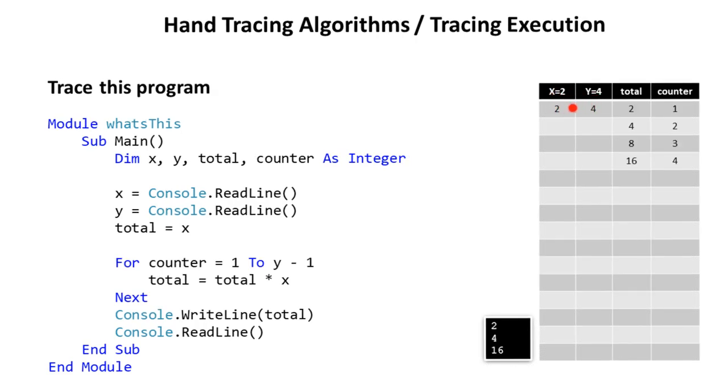So X and Y shouldn't have been updated after they initially set. Here's what the rest of the trace table should look like. And the output window should say two, four, and then 16.